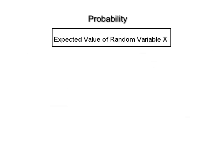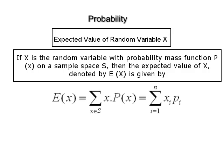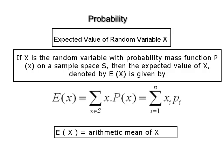Expected value of a random variable. If X is a random variable with probability mass function P(X) on a sample space S, then the expected value of X, denoted by E(X), is given by E(X) = Σ X · P(X), where X belongs to S. It can be proved that the expected value of a random variable is the arithmetic mean of X, that is X bar.